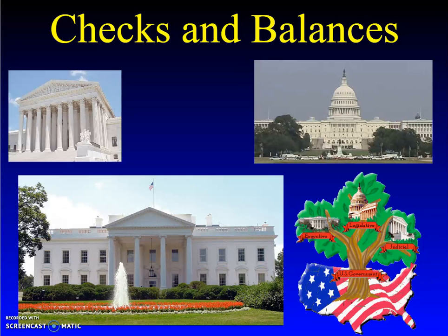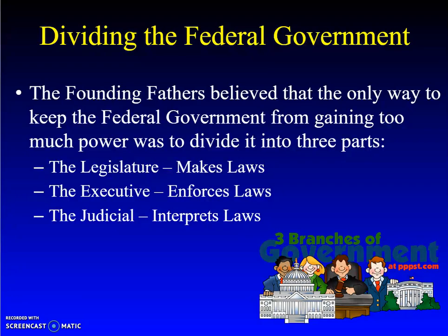We're taking a look at checks and balances, which is really a way of dividing the federal government. They were trying to make sure that no branch became too powerful. Each branch has its specific job: the legislative makes the laws, the executive enforces the laws, and the judicial interprets the laws.